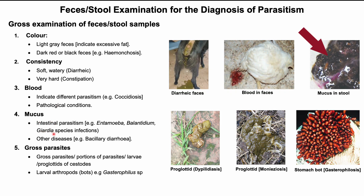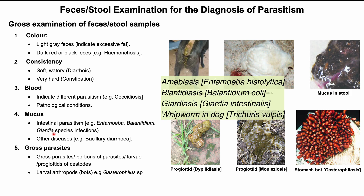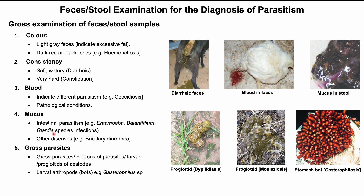Presence of mucus in feces or stool usually indicates protozoal infection such as amoebiasis, balantidiasis, and giardiasis. In whipworm infection in dogs, excess mucus with blood is also observed. In different bacterial or viral infections, mucus can also be found.